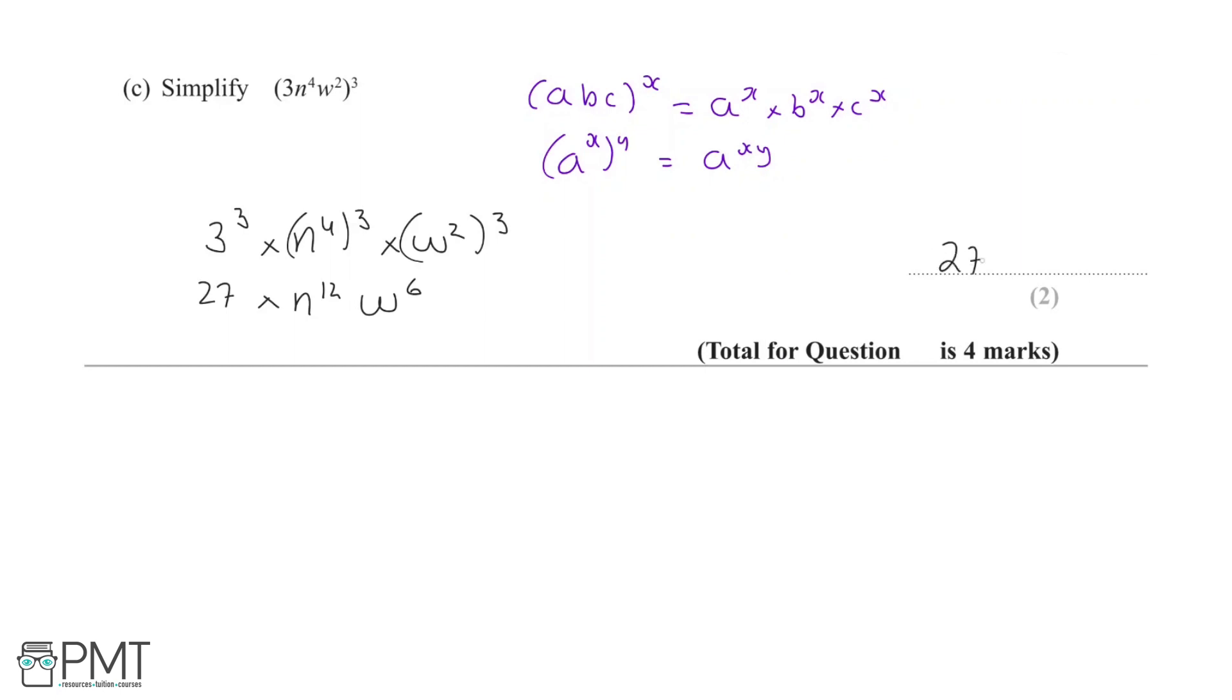Combining this, we get 27n¹²w⁶. This part is worth 2 marks. The first mark comes from any 2 of these 3 terms being correct, and the second mark comes from a fully correct final answer.